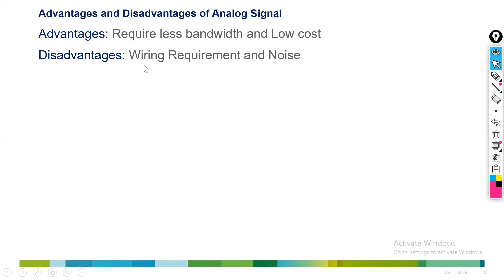Next, disadvantages: wiring requirement and noise. In an analog signal, one single connection can make only one call. For example, if it is a corporate network with 100 users, there are 100 voice connections required. When there are 100 connections, it's very difficult to manage the cabling — it's difficult to understand which cable and which phone is connected. That is one disadvantage.